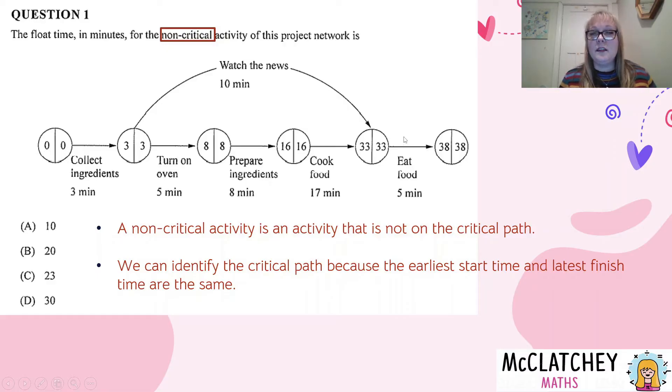So if we look all the way across this central line here, we've seen that the numbers are the same, 0, 0, 3, 3, 8, 8. So this is our critical path across the middle, which means that watching the news is our non-critical activity, and it's the only one we're interested in in this network.